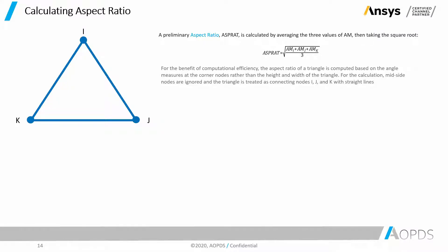For the benefit of computational efficiency, the aspect ratio of a triangle is computed based on the angle measures at the corner nodes rather than the height and width of the triangle. For the calculation, mid-side nodes are ignored and the triangle is treated as connecting nodes I, J, and K with straight lines.